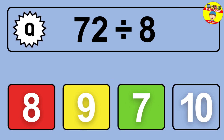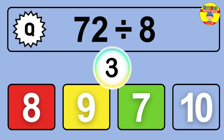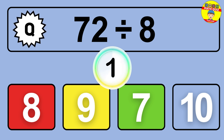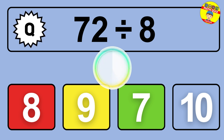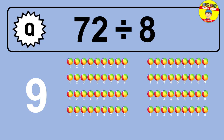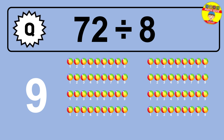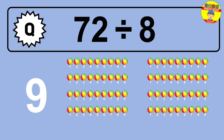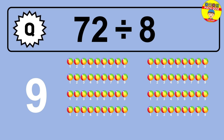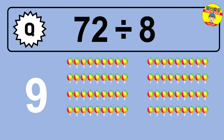What is 72 divided by 8? Imagine this — you have 72 objects to divide into groups of 8. How many groups can you make? Let's think about it. Ready to find out? Let's break it down. Let's imagine you have 72 objects. Can you picture them lined up? Now think about splitting them equally into smaller groups of 8.